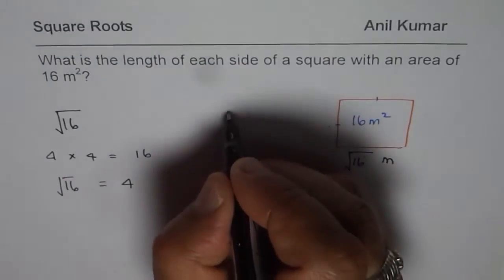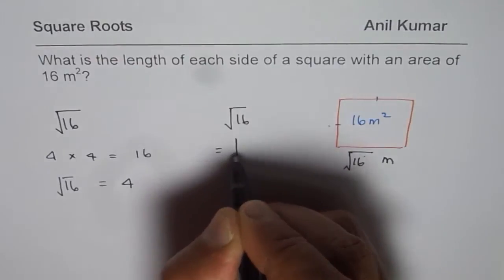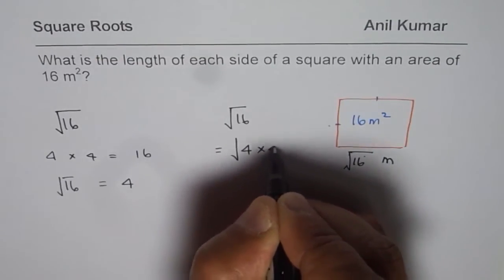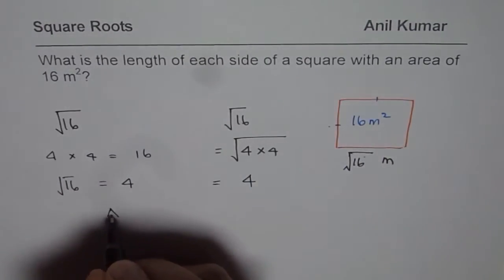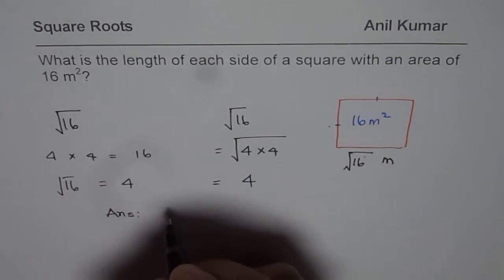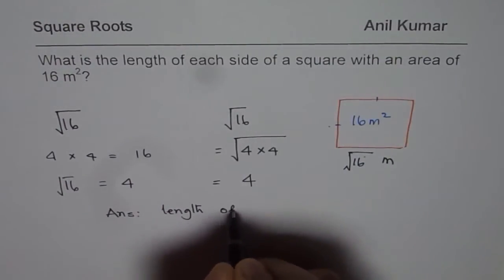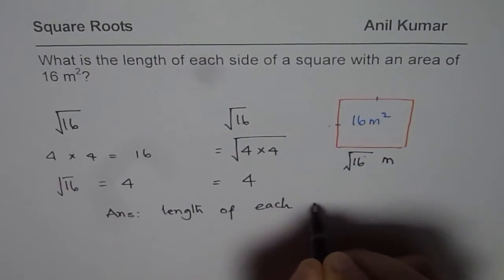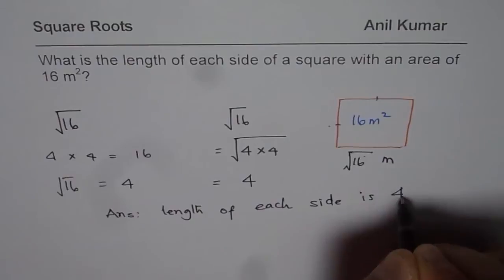The other way is we could write 16 as equal to square root of 4 times 4, and then we can write 4 as our answer. So anyway, we get our answer as that length of each side is 4 meters.